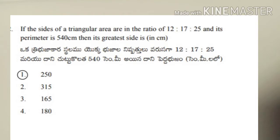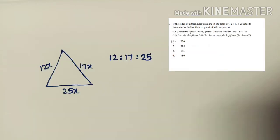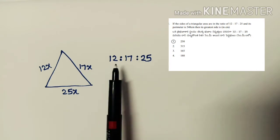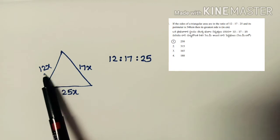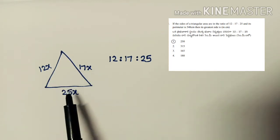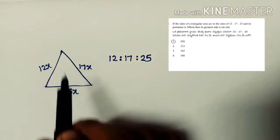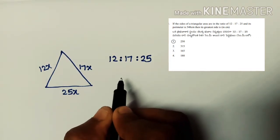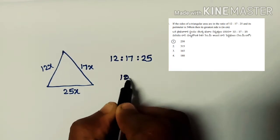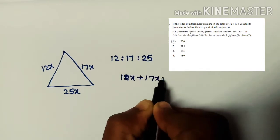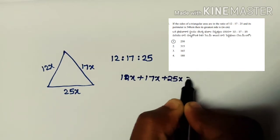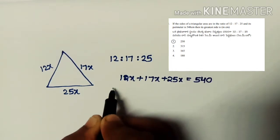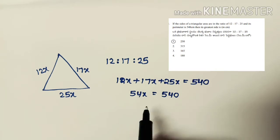Next problem: the sides of a triangle are in the ratio 12:7:25 and its perimeter is 540 cm. Find the greatest side. Options are 250, 315, 165, and 180. The sides are taken as 12x, 7x, and 25x. Perimeter = 12x + 7x + 25x = 540, so 44x = 540.